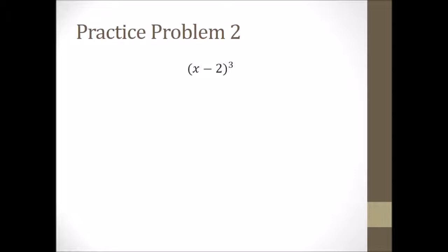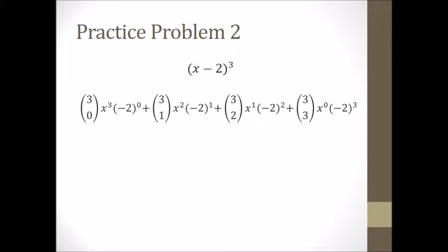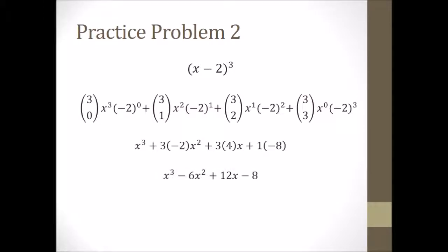For X minus 2 cubed, I used the binomial expansion theorem. Remember: 3 choose 0 to begin, and the exponent is to the third power on the variable while the exponent on the number is 0. Then increase it to 3 choose 1, decrease X to X squared, and raise negative 2 to the first power. Then 3 choose 2, decrease the variable, increase the number. Finally 3 choose 3, completely decrease the variable and increase the number. Simplifying gives X cubed plus 3 times negative 2 times X squared plus 3 times 4 times X plus 1 times negative 8, which simplifies to X cubed minus 6X squared plus 12X minus 8.